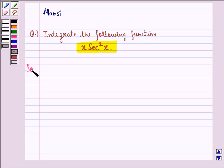So let us start with the solution to this question. Let I be equal to integral of x secant square x dx. Now, according to the ILATE rule, we see that an algebraic function is given preference over the trigonometric function for becoming the first function. So this will be the first function, this will be the second function.